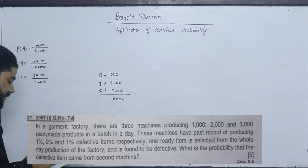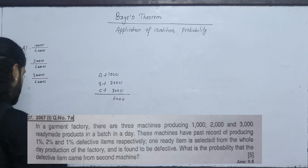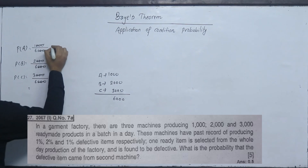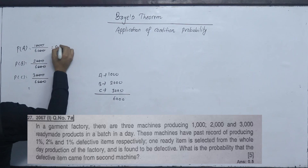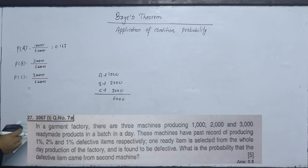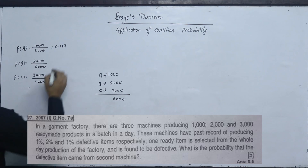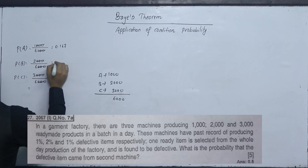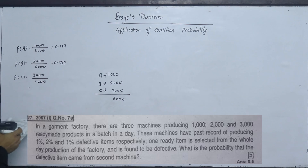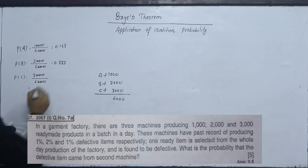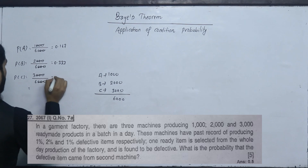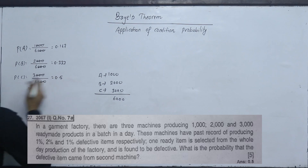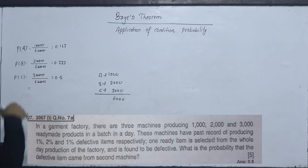The total production is 6000 items. The probability of selecting from machine 1 is 1/6 ≈ 0.167, from machine 2 is 2/6 ≈ 0.333, and from machine 3 is 3/6 = 0.5. These sum to 1.